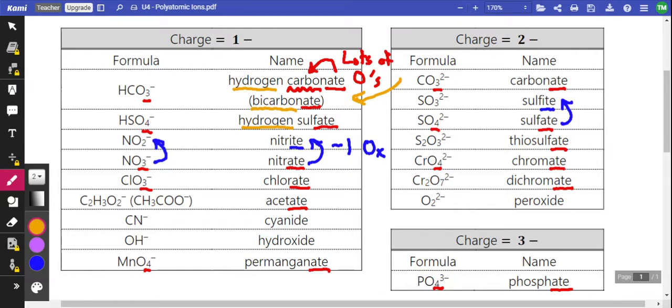So we're a little less negative. We're a little more positive. So that's how we get hydrogen carbonate to have a negative one charge instead of a negative two compared to carbonate.